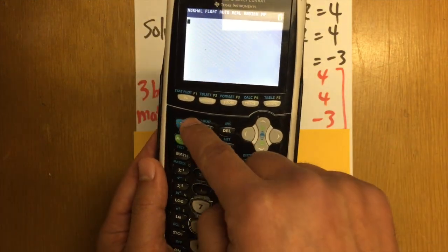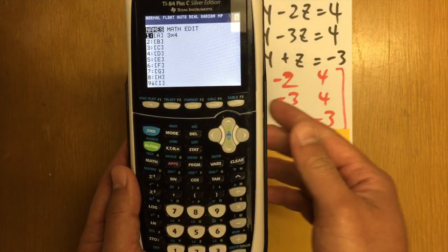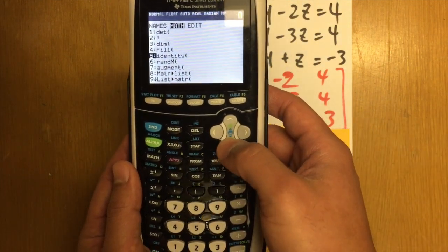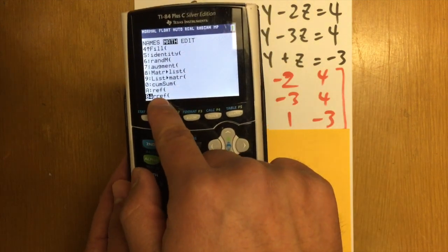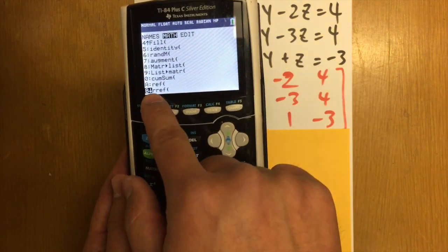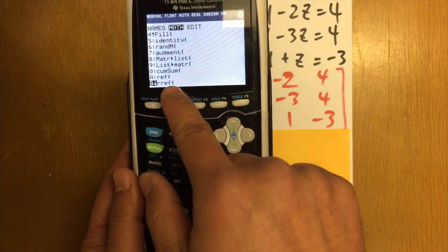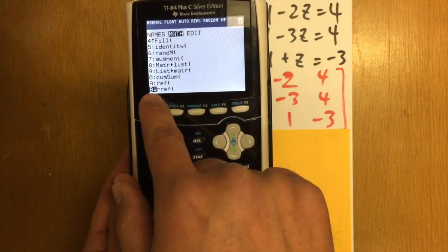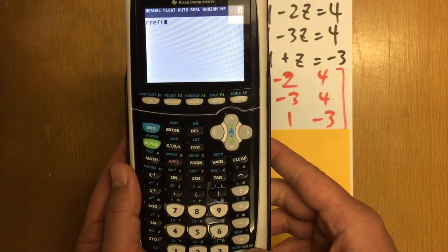And then we are going to go back to the matrix again. Second, matrix. But this time, we are going to go to math, because we are going to do the computations. We are going to go down to choice B, RREF. This will tell you the answer. Don't use REF. Use RREF. These two look similar, but be sure you use choice B, RREF.